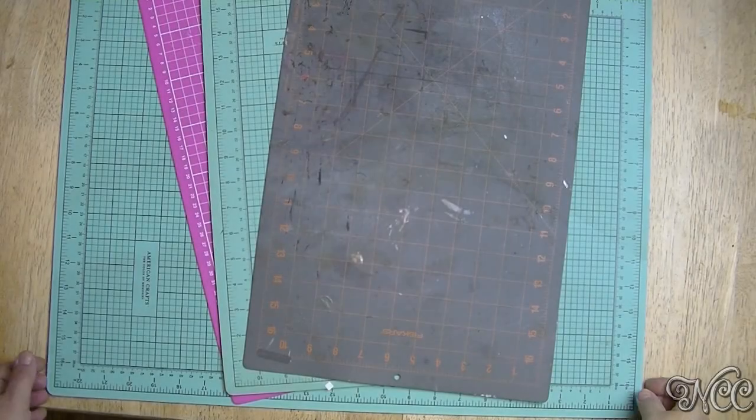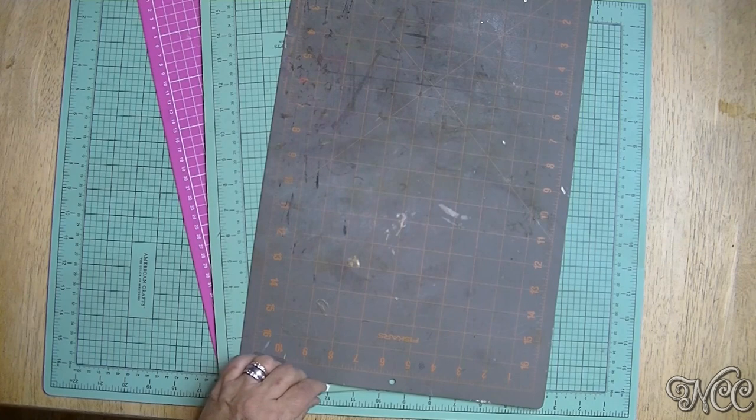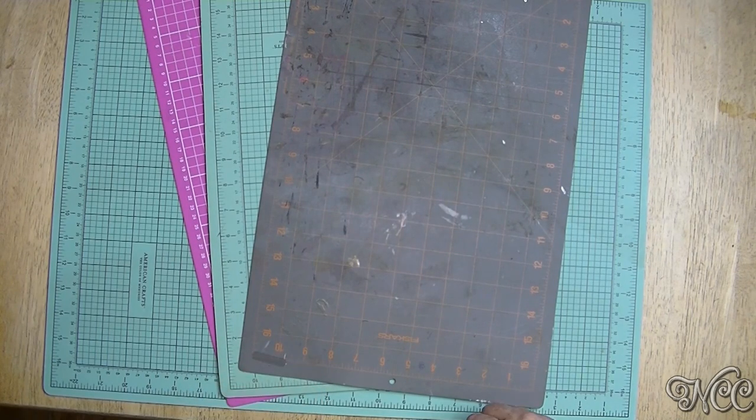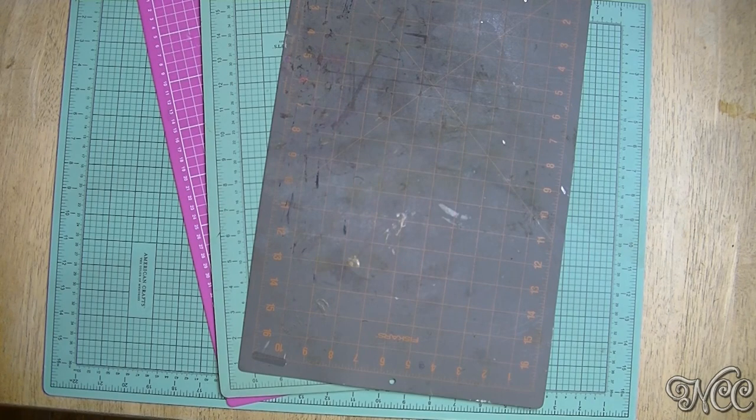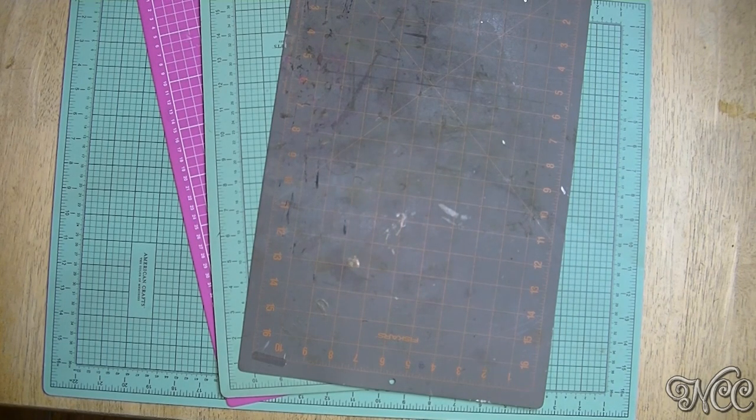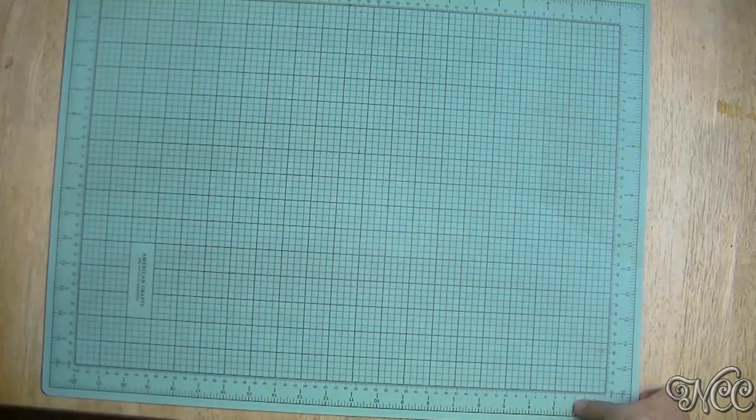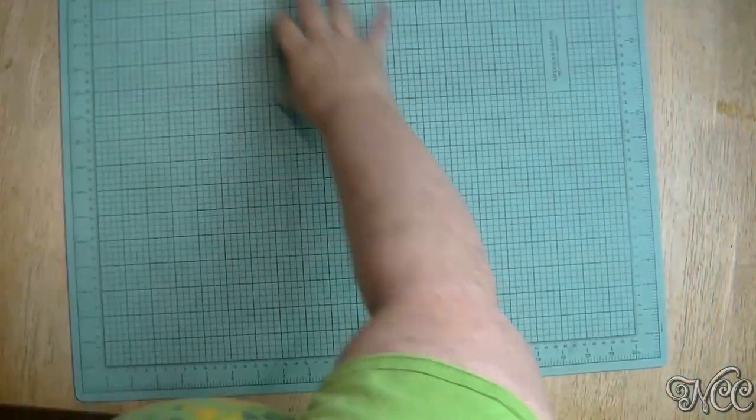All right, we're gonna get started. I really just wanted to do a quick overview of things that I reach for every single time I sit down to do a project. Now I said before I do not have a dedicated craft room. So we make do with what we have. Today I'm at my kitchen table. I think it's essential to have a work mat and this one is actually upside down. This is my newest one.